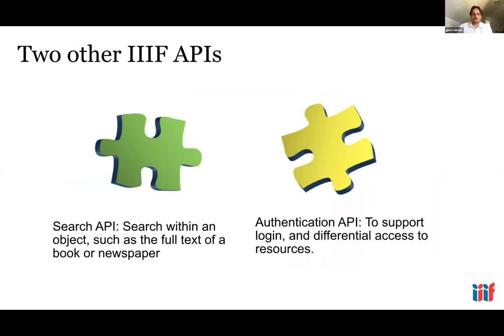There are two other IIIF APIs. The search API, which I showed earlier, allows for searching within the text of an object — like a PDF search box — and can be used to search transcriptions like OCR or crowdsourcing annotations. The authentication API allows materials to be restricted, for example to a subset of users, or if you need to agree to a license before viewing the item.